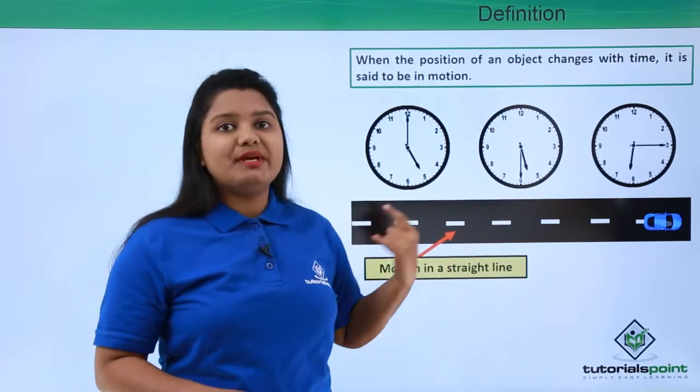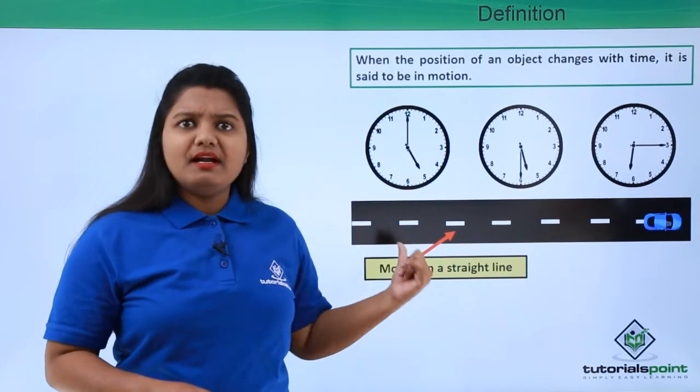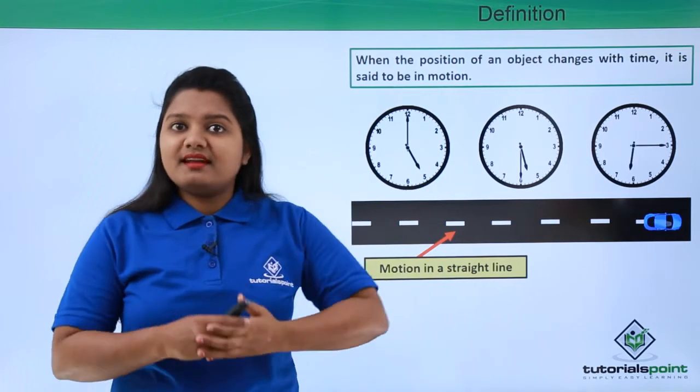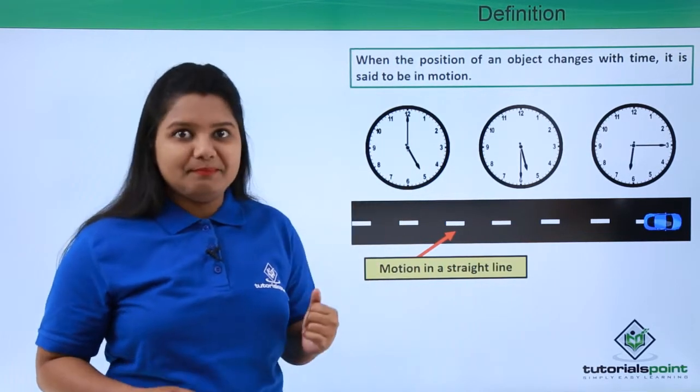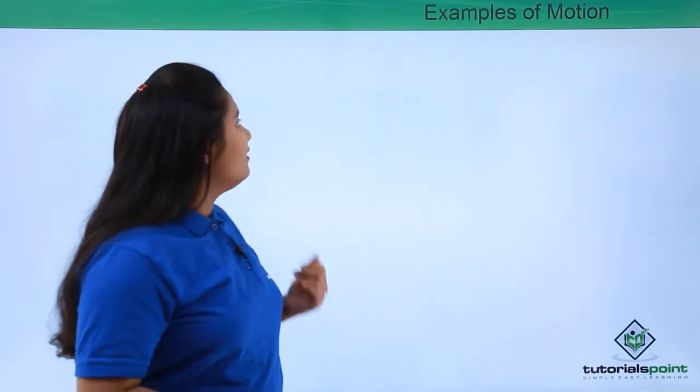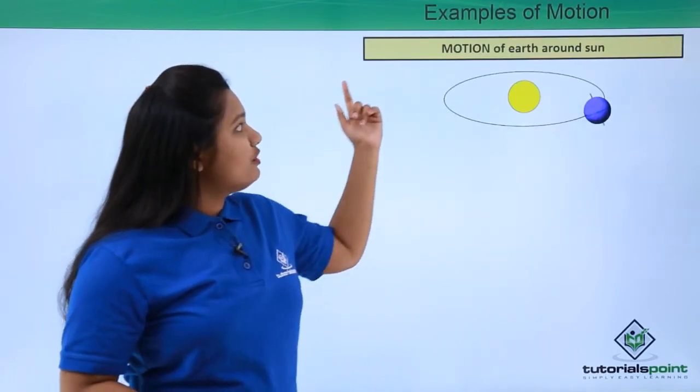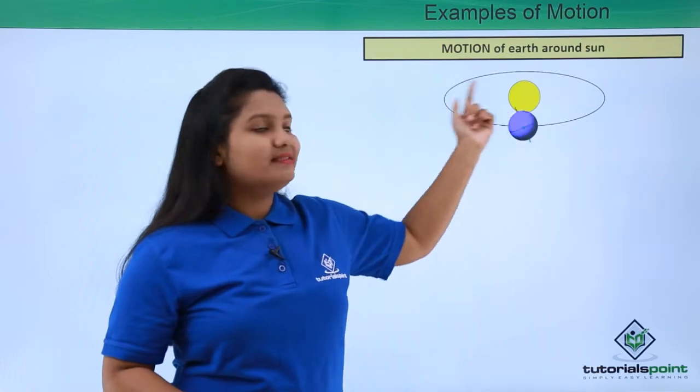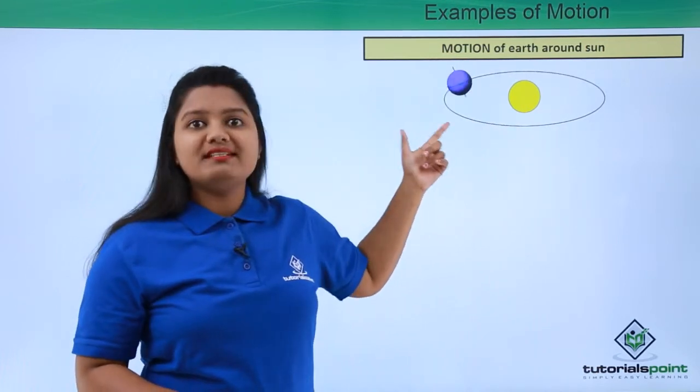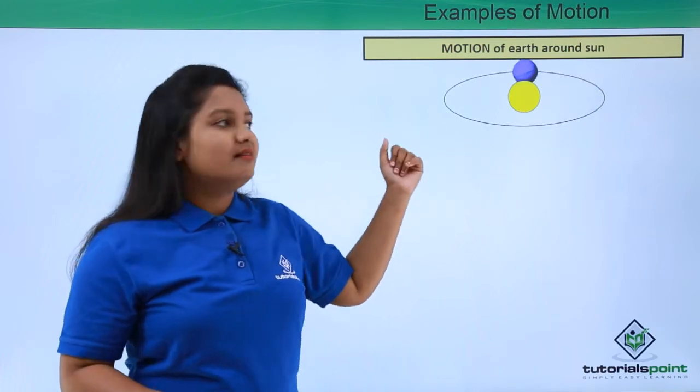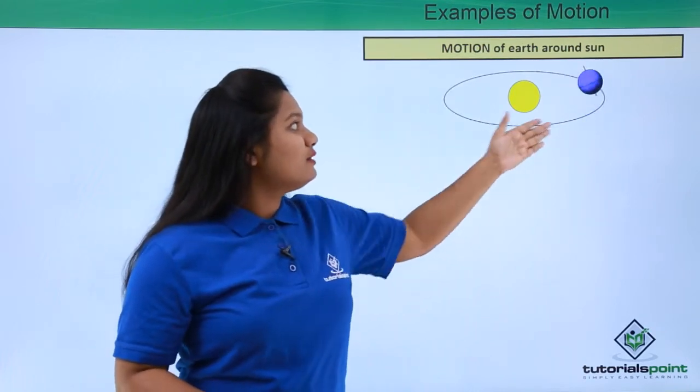Now apart from this type of motion, there are so many other types of motion. Let us have a look at those examples. Now the motion of earth around the sun is something like this, and this is clearly not a straight path.